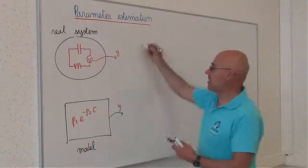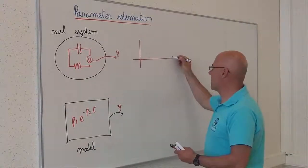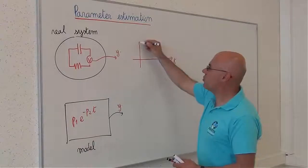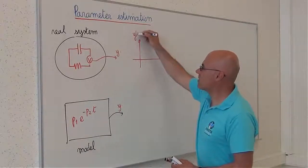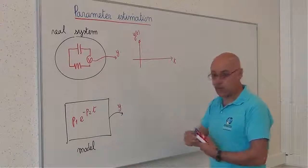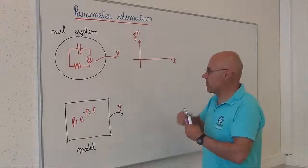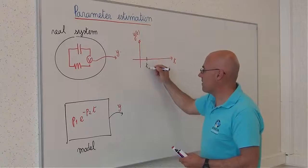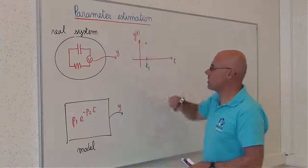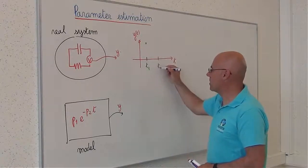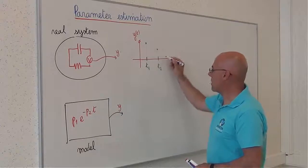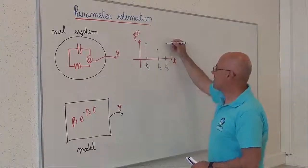Assume that on my actual system, I am able to collect three measurements. Because of the sampling time, I am not able to measure all the signals. So, for instance, at time T1, I measure this point. At time T2, I measure another point. At time T3, this is my data.